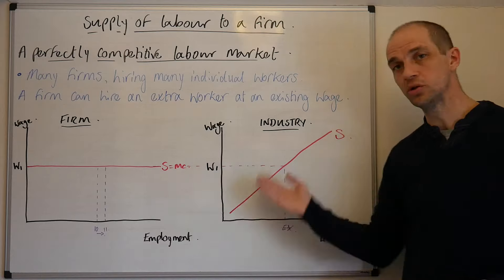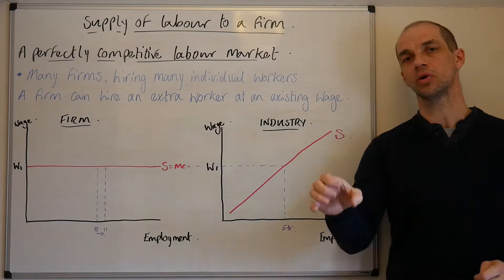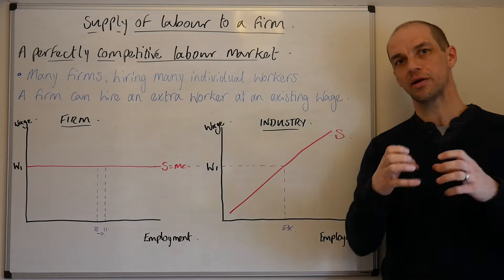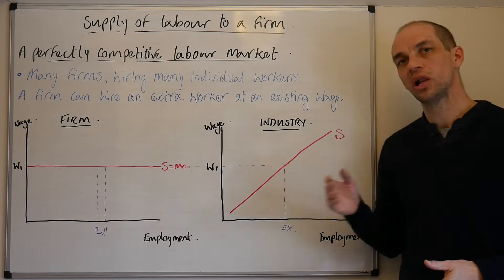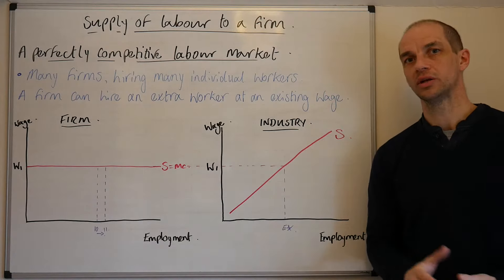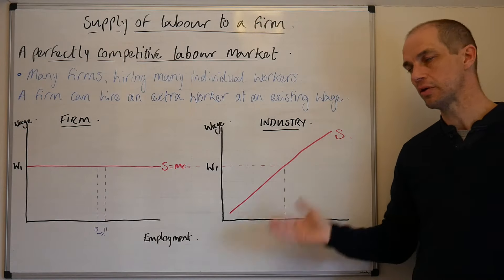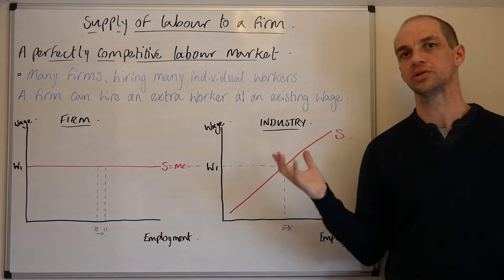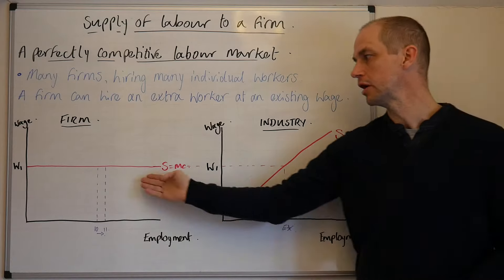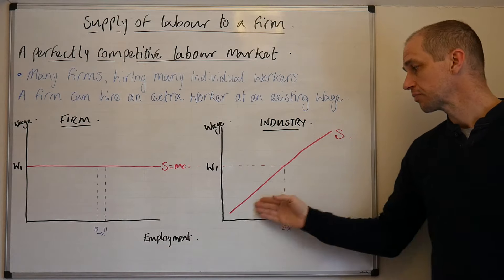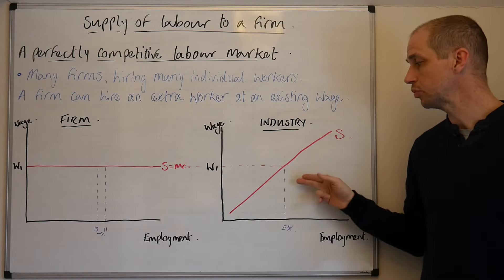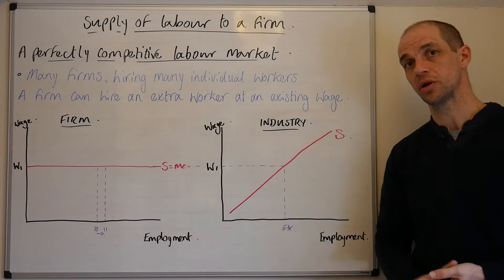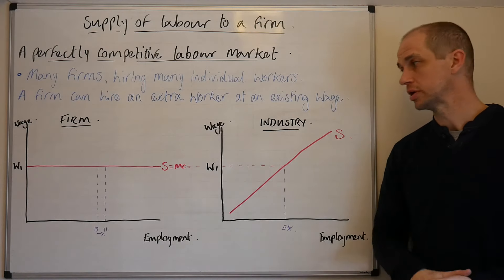This translates to the industry supply curve, where you can compare wages across different pubs and restaurants and see what differentials exist. You'll find they're often clustered around a particular area, and therefore you are likely to see the same sort of wage for the industry as a whole. There is an important difference here though: for the firm, they've almost got an infinite number of individual workers they can employ. But for the industry curve, it becomes upward sloping — to attract more and more workers to that particular industry, you would need to offer higher wages.